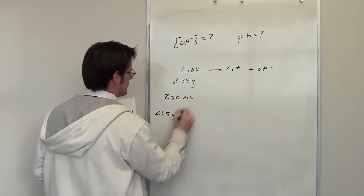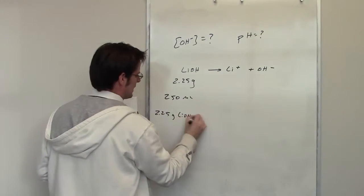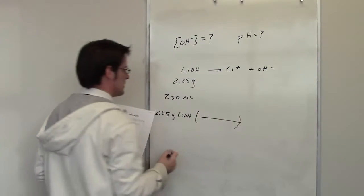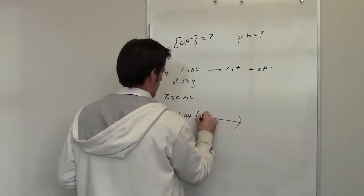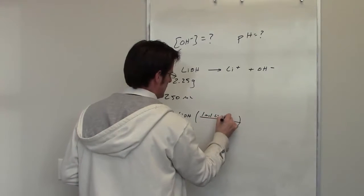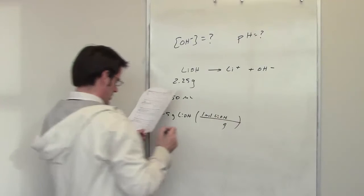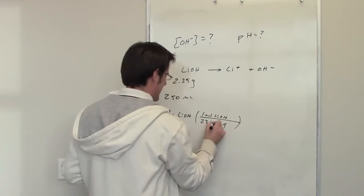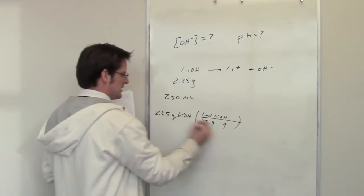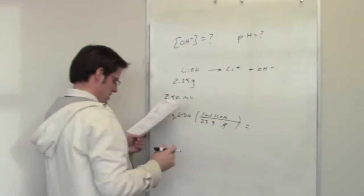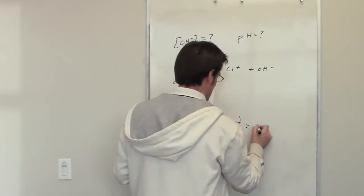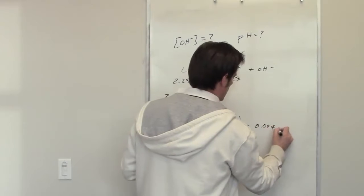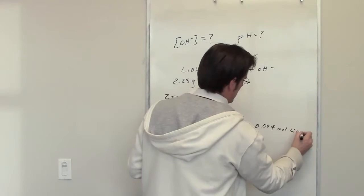I've got 2.25 grams of lithium hydroxide. I need to figure out how many moles that is. One mole of lithium hydroxide equals 23.9 grams. Grams cancel out and I end up with 0.094 moles of lithium hydroxide.